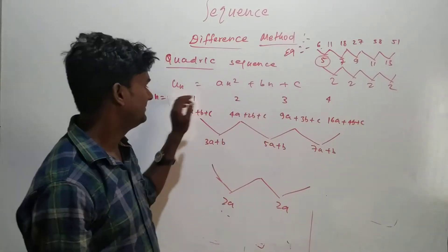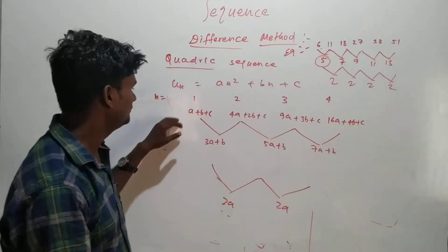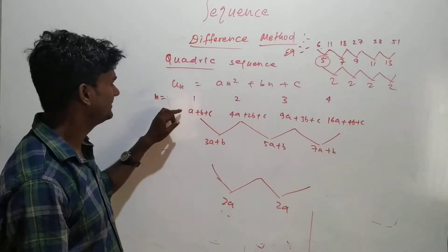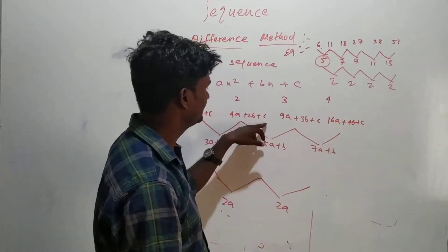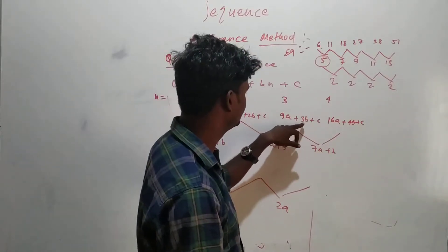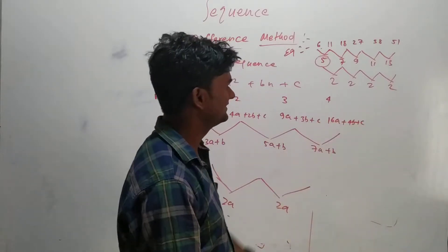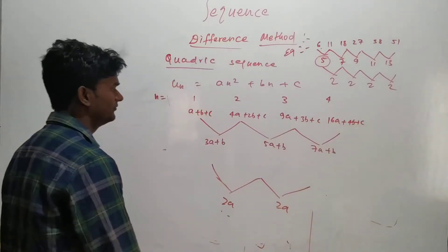If n equal to 1, I have taken 1, 2, 3, 4 as n values. So if I substitute n equal to 1, it will be a plus b plus c, here it will be 4a plus 2b plus c, and here it will be 9a plus 3b plus c and so on. Again we will be getting 6a plus 4b plus c if n equal to 4.